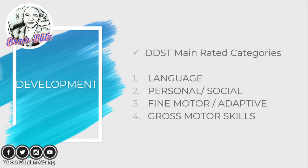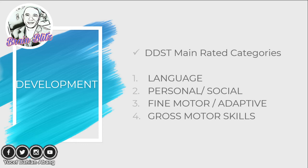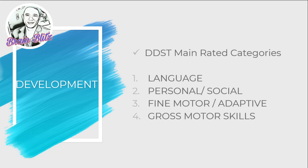There are four main rated categories of the Denver Developmental Screening Test. First, language — a child is considered well-developed when there is systematic development of language. Second, personal and social — the capacity of a child to relate with others. Third, fine motor adaptive skills — using fine muscles to perform expected roles. Fourth, gross motor skills — using large muscles — which indicates the child is developing properly according to age.